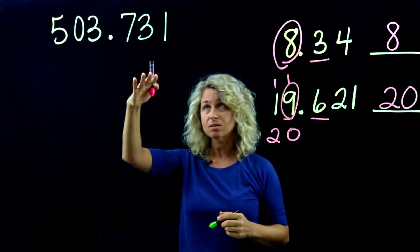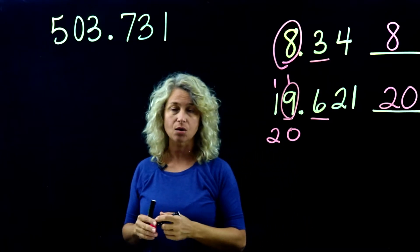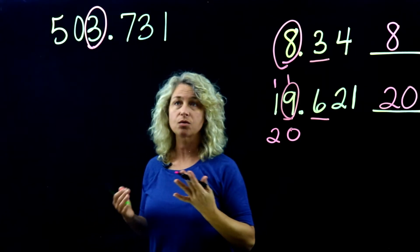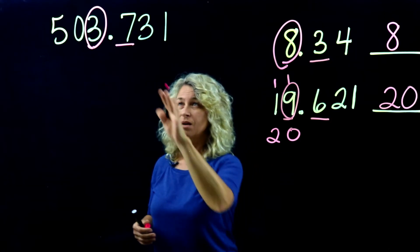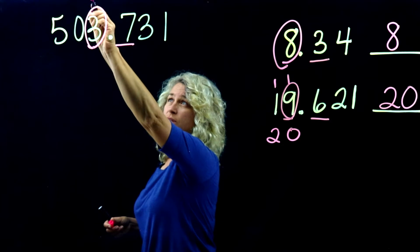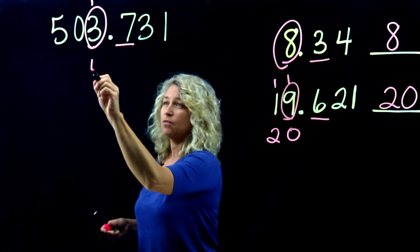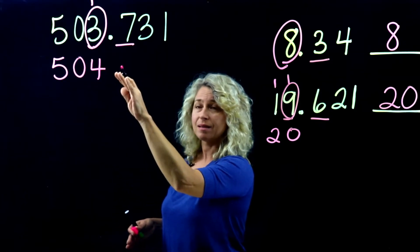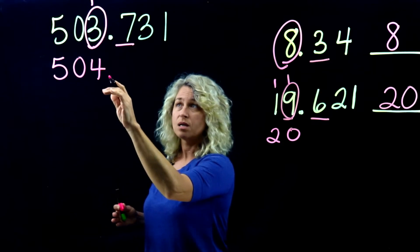Let's look at another example: 503 and 731 thousandths rounded to the nearest whole number. Always circle the ones place when rounding to the nearest whole. Underline the digit to the right — the 7. Five or more adds 1, so 3 plus 1 is 4.